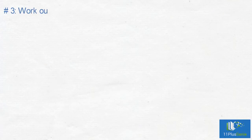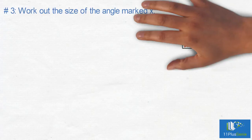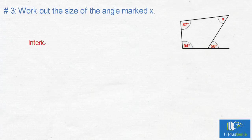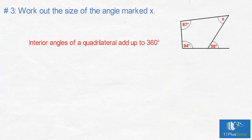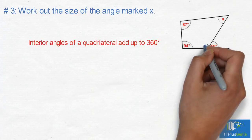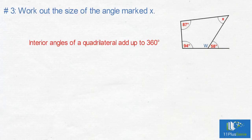Example 3: Work out the size of the angle marked X. We know that the interior angles of a quadrilateral add up to 360 degrees. We first need to work out the size of the angle adjacent to the 58-degree angle. Let's name this angle W.